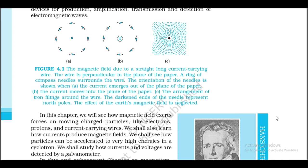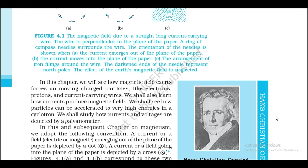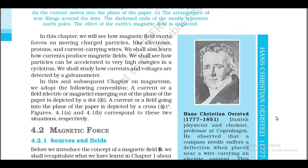The effect of the Earth's magnetic field is neglected. In this chapter we will see how magnetic field exerts forces on moving charged particles like electrons, protons, and current-carrying wires. We shall also learn how currents produce magnetic fields, how particles can be accelerated to very high energies in a cyclotron, and how currents and voltages are detected by a galvanometer. We adopt the convention: a current or field emerging out of the plane of the paper is depicted by a dot; a current or field going into the plane of the paper is depicted by a cross.